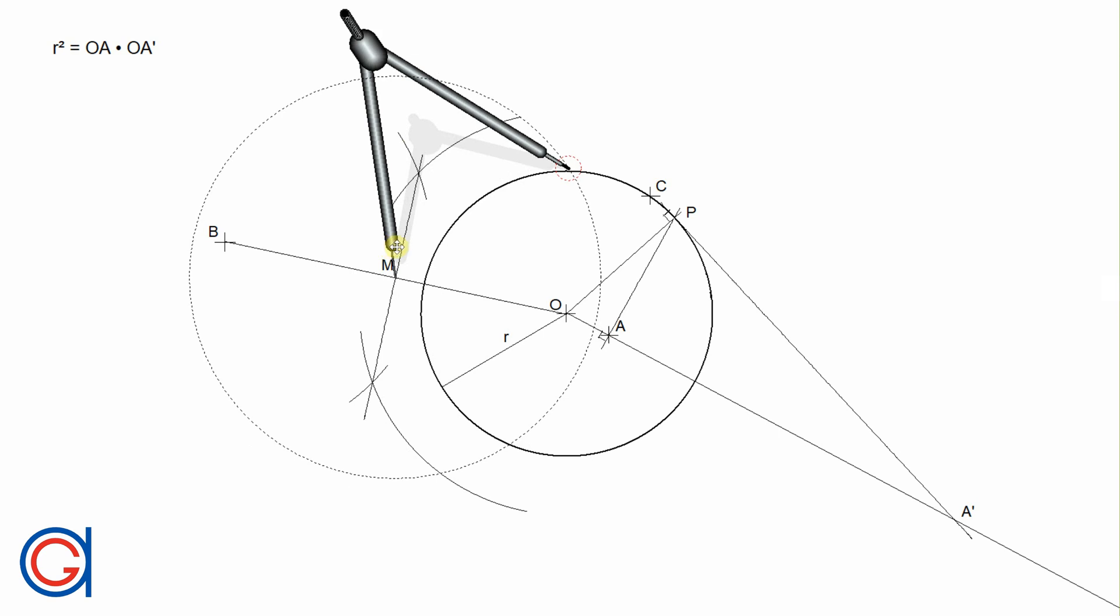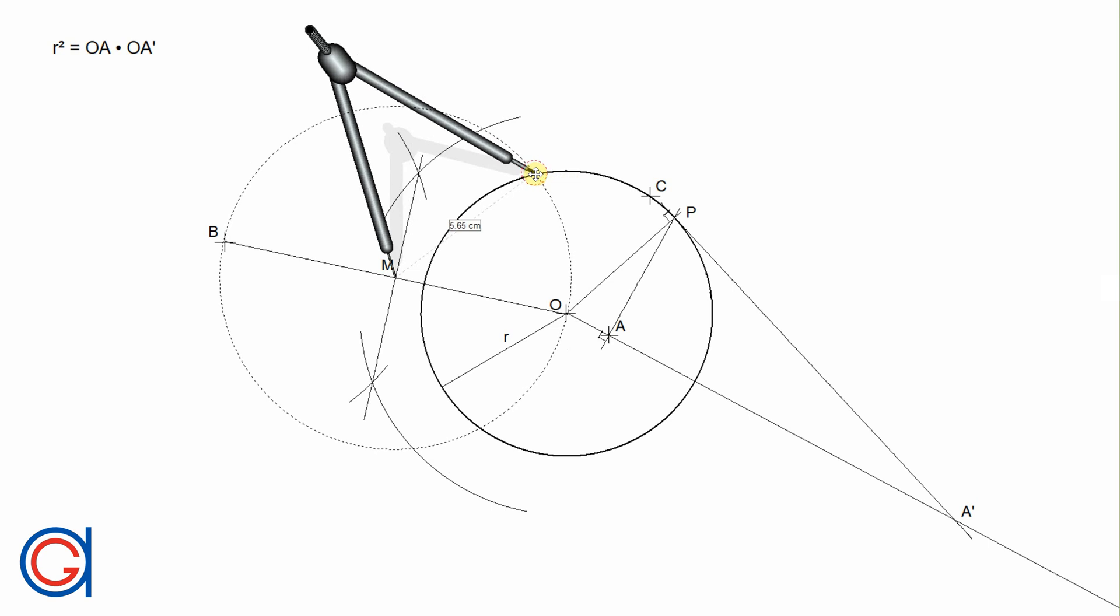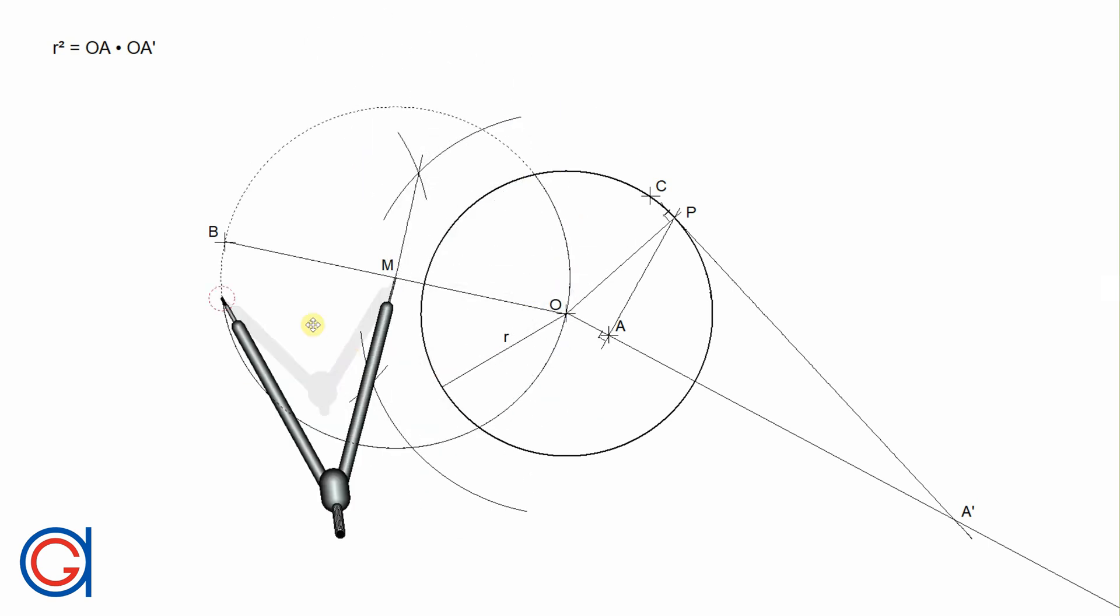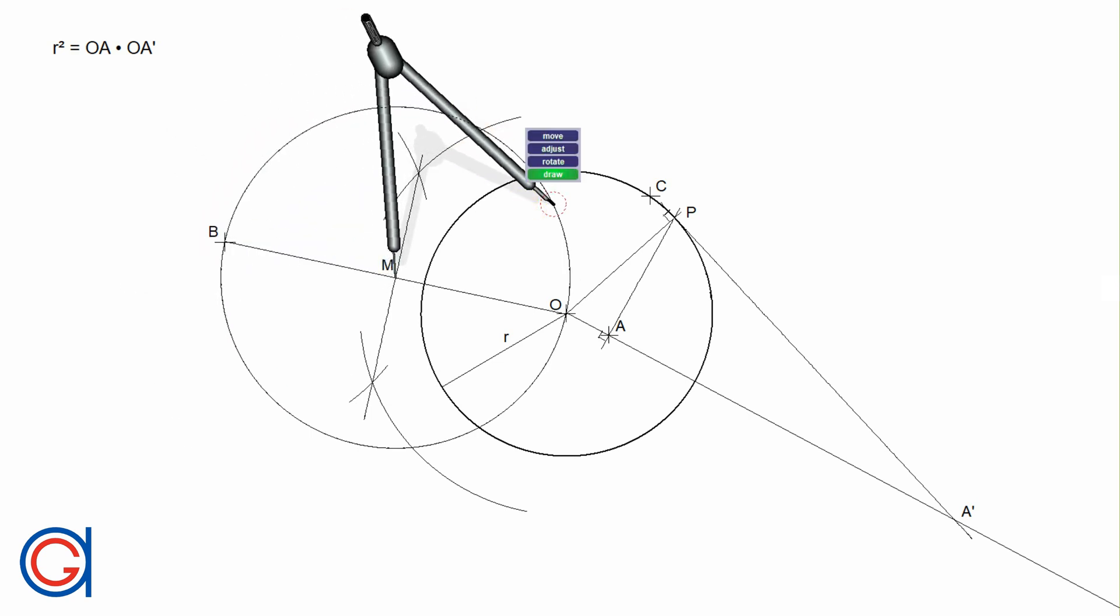So now setting our compass on point M and with a radius MO, we are going to draw a construction circle, which cuts our given circle at two new points, which we will call Q and S.